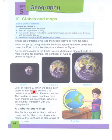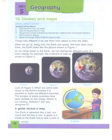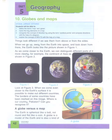Look at figure three. When we come even closer to the earth's surface, it is possible to make out different countries. We can see even Pakistan here. The borders of some countries have been marked on this map. Where is our country Pakistan? Can you recognize it? Yes — this is Pakistan, and we can recognize it.